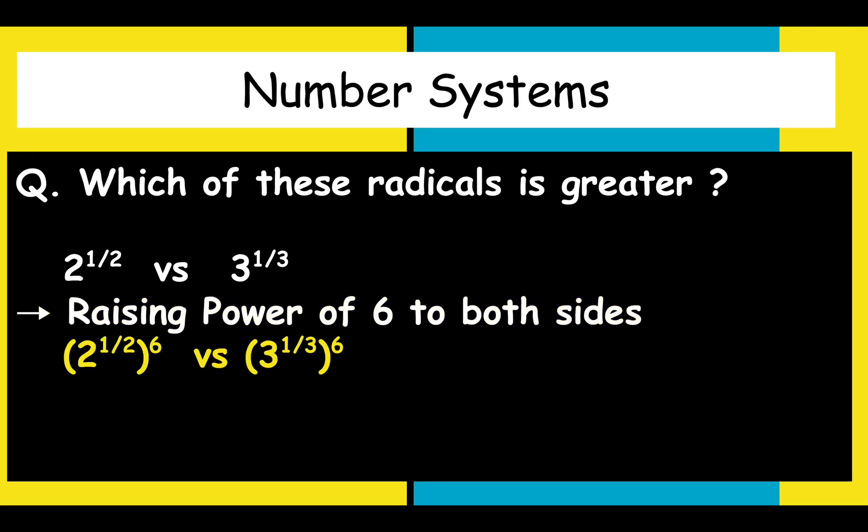So, if we raise power of 6, what will happen is like both of the LHS and RHS will get converted into integral powers. So, it's 2 raised to 1/2 into 6 and 3 raised to 1/3 into 6. So, it's 2 cubed versus 3 squared.